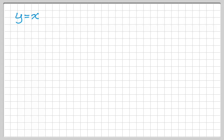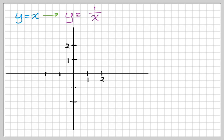The reciprocal function to y equals x is y equals 1 over x. What I'm going to do is create a graph of y equals x and use it to create a graph of y equals 1 over x. If you understand the basics of that, you understand the basics of graphing reciprocal functions, which are the basics of rational functions.